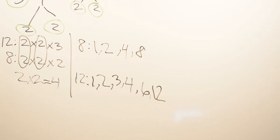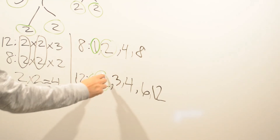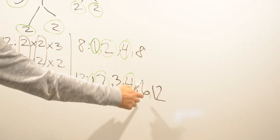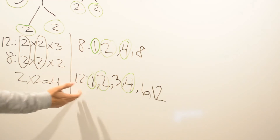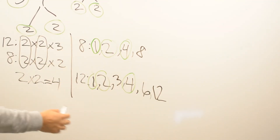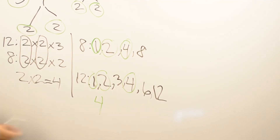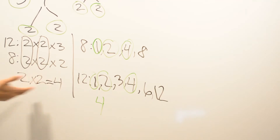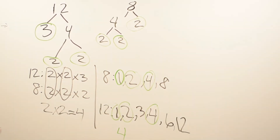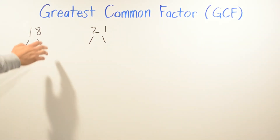Comparing the two lists: both have 1, 2, and 4. We have 3 in the 12-list but not in the 8-list. We have 8 in the 8-list but not in the 12-list. All the common factors are 1, 2, and 4, but since we want the greatest common factor, the answer is 4. This matches what we got using prime factorization — both methods give the same answer.